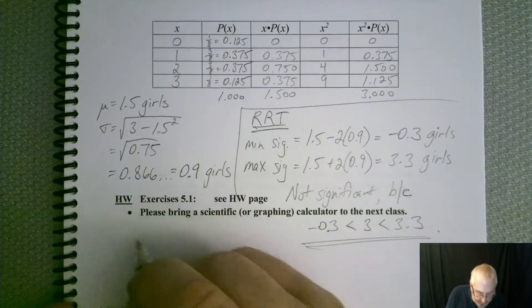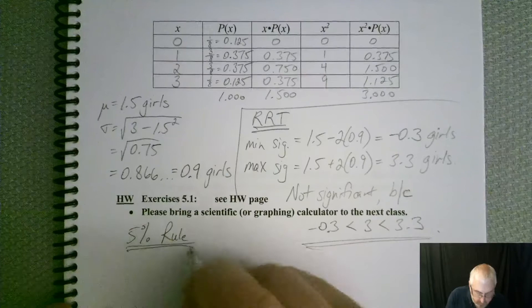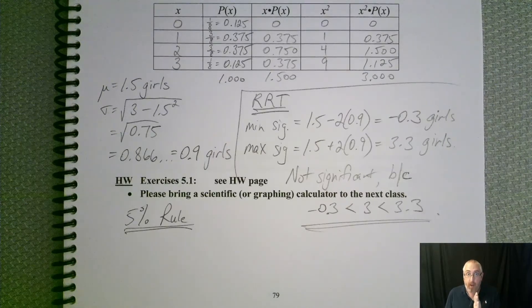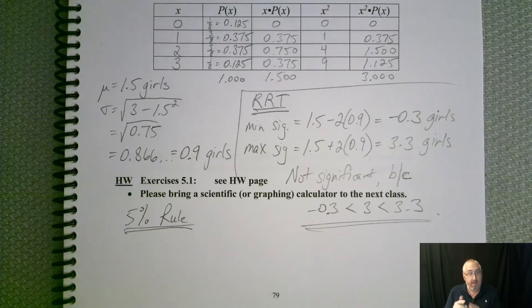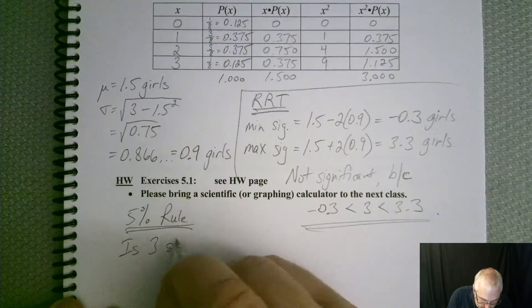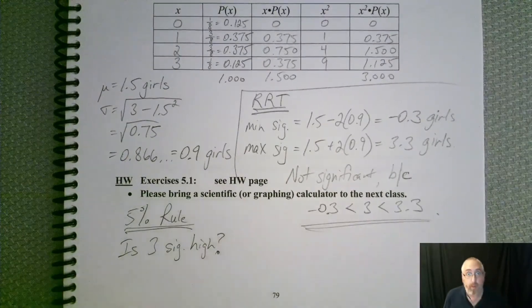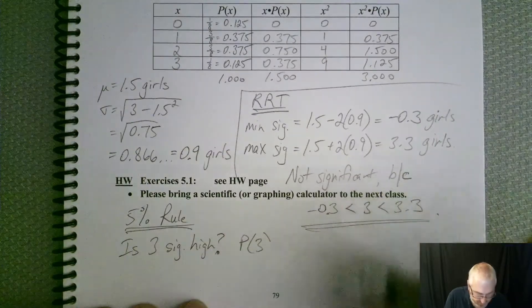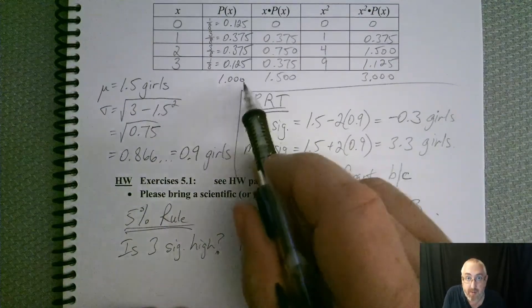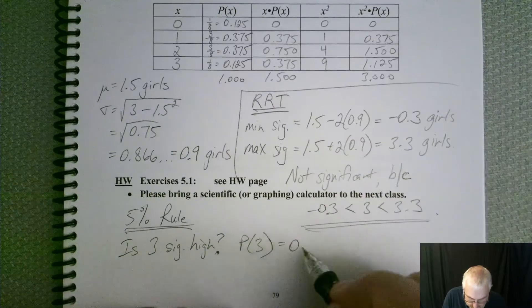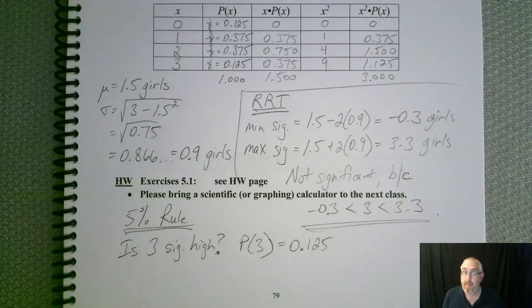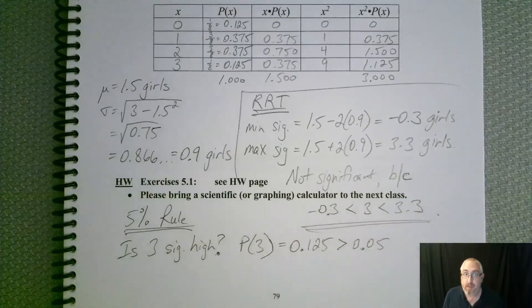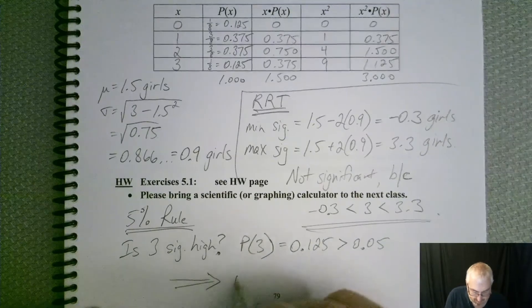So that's why. It's between those two cutoffs that you just found, so it's got to be not significant. So that's one way. What about the 5% rule? So if we're looking at 3 probability-wise, we have to look at 3, and we're looking at significantly high. So is 3 significantly high? What do we look at? We look at the probability of 3 and up. Well, what's the probability of 3? I'm going to snap all my lead. Probability of 3 is right there. 0.125. How does that compare to 5% or 0.05? It's greater than it.